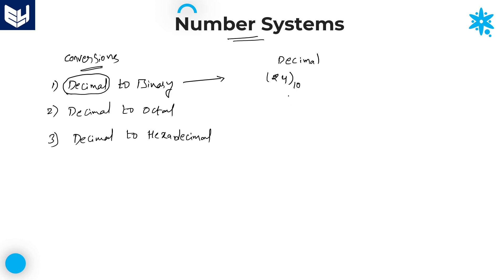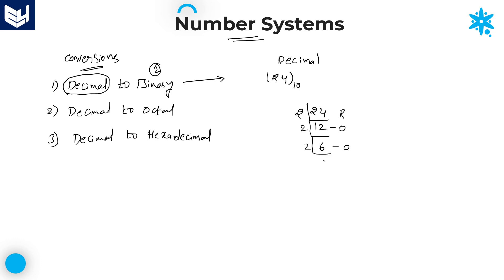To convert any decimal number into binary, remember that binary has exactly two digits. So divide the given decimal number by 2 successively. Take 24: 24 divided by 2 is 12 remainder 0; 12 divided by 2 is 6 remainder 0; 6 divided by 2 is 3 remainder 0.